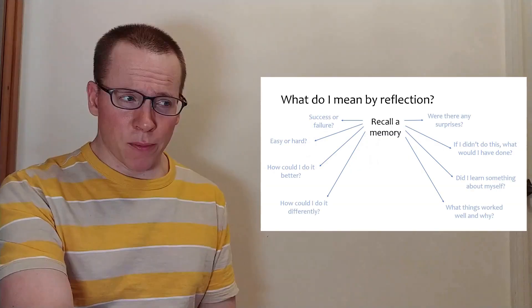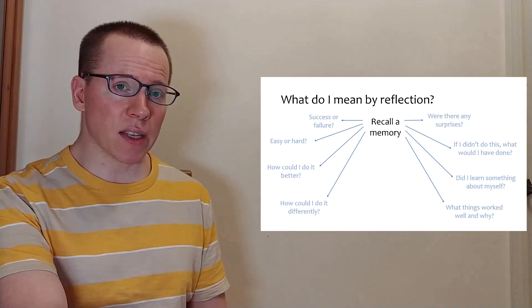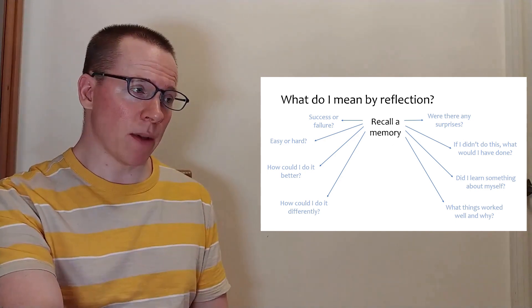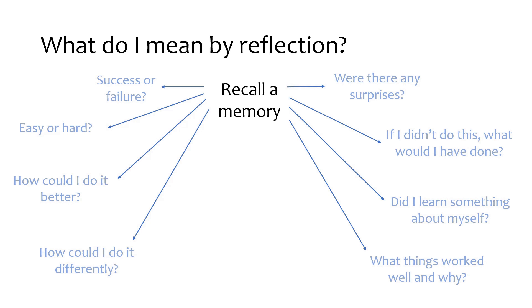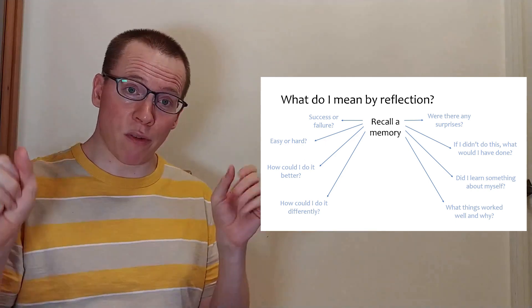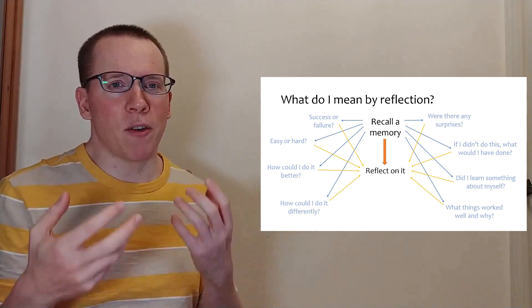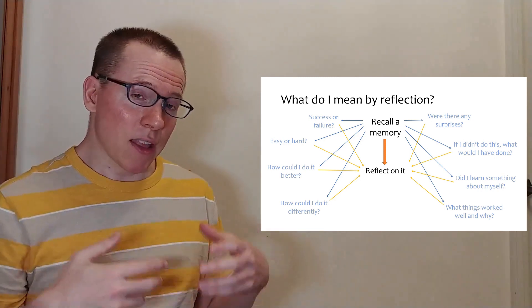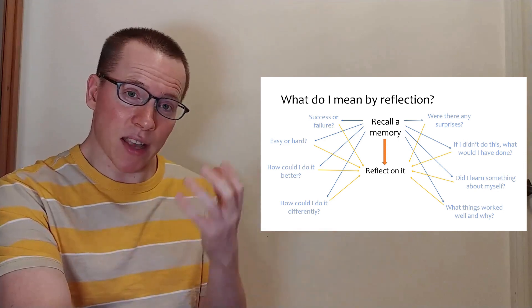What do I mean by reflection? Well, firstly, you need to recall a memory from your experiment and think about all of the different things that happened. And then you can ask some questions about that memory. For example, broadly speaking, was it a success? Was it a failure? Was it easy or hard? How could I do it better? How could I do it differently? And those two questions are different because maybe you think it went well, but maybe there's another method you think you could try in the future. When we start asking those questions and questions like that about our memories, that's the start of our reflections. And the answers that we give ourselves are the material that we can use to reflect on. And we can start to analyze what we've done.